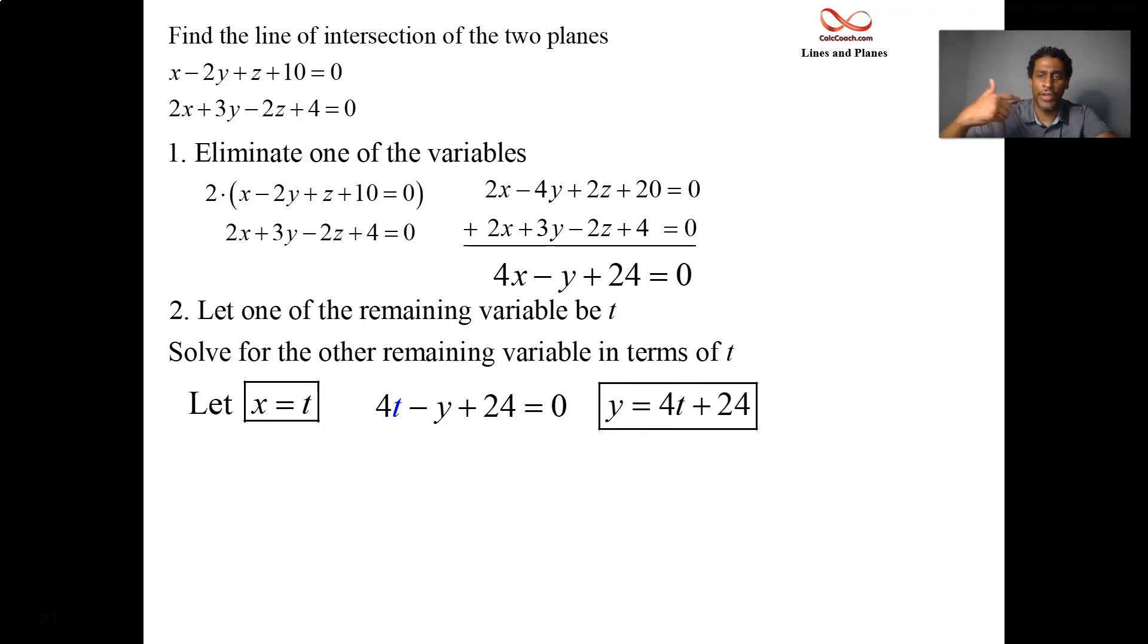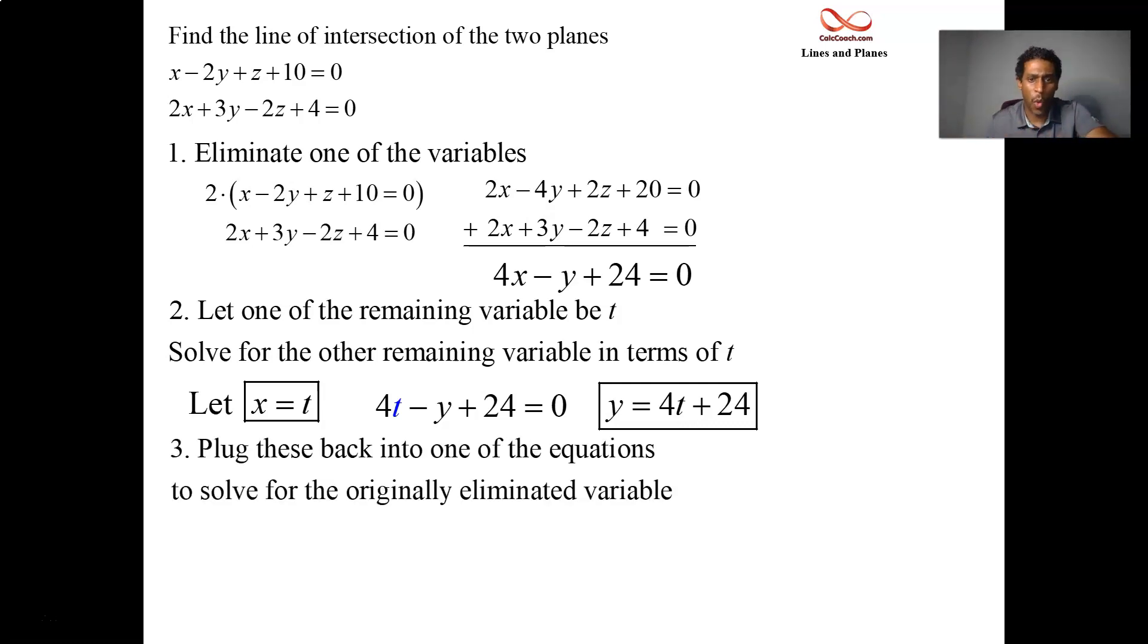We know that x is t. We know that y is 4t + 24. We just need z. Go back to one of the original equations. Plug in x being equal to t, plug in y being equal to 4t + 24, and get what z is.